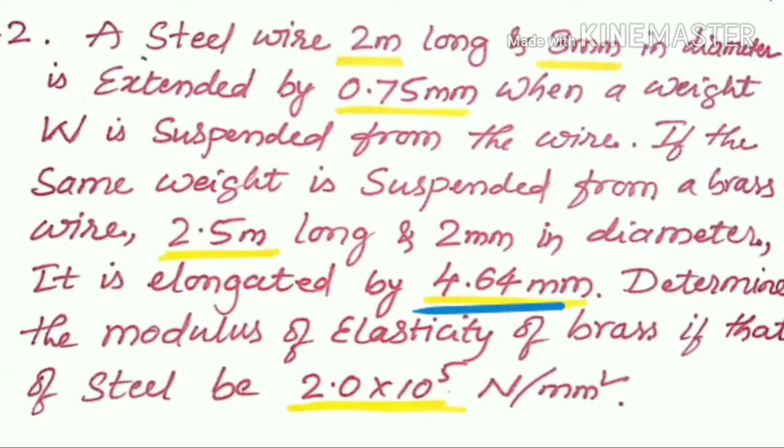We have to calculate the modulus of elasticity of the brass. For the steel they have given it as 2.0 x 10^5 N/m^2.